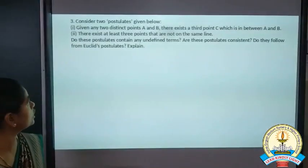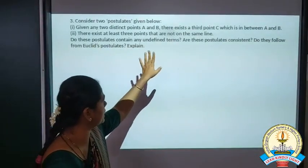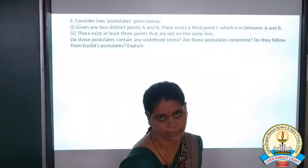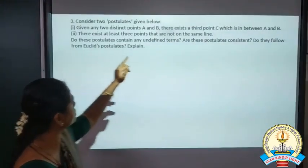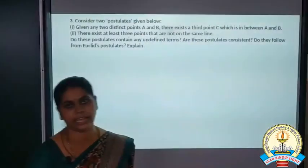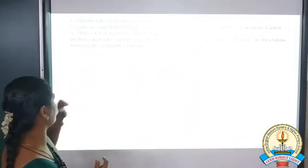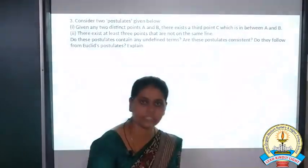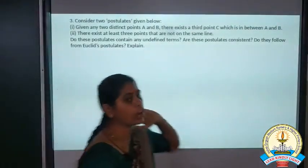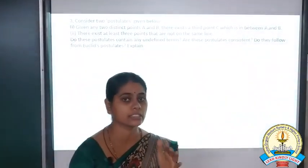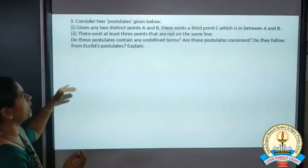Third question: consider the two postulates given below. First: given any two distinct points A and B, there exists a point C which lies between A and B. Second: there exist at least three points that are not on the same line. We have to discuss these two postulates. Do they contain any undefined term? Yes, they contain an undefined term: it is mentioned that C is a point on AB but it is not mentioned whether C is the midpoint or where exactly it lies. That is called the undefined term.